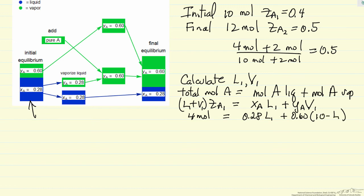We can just rearrange this equation, and we have 0.6 minus 0.28 times liquid one is equal to 6 minus 4, which is 2.